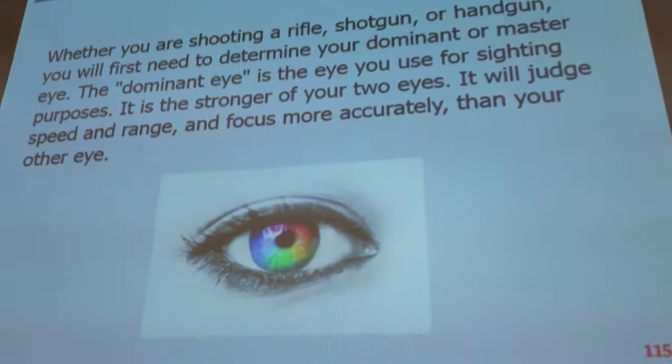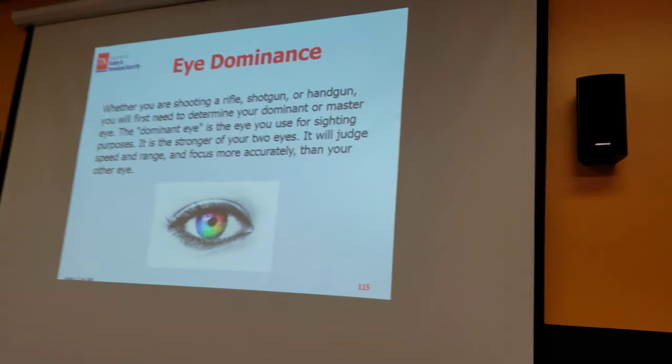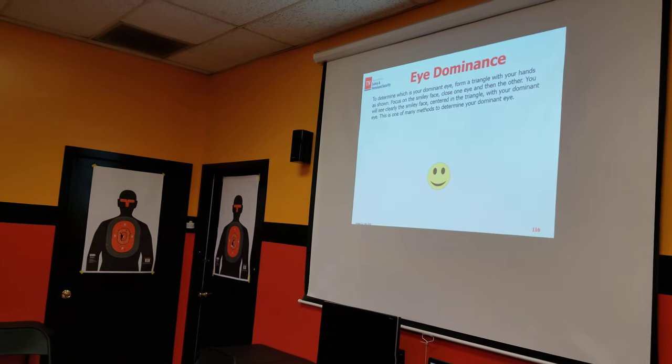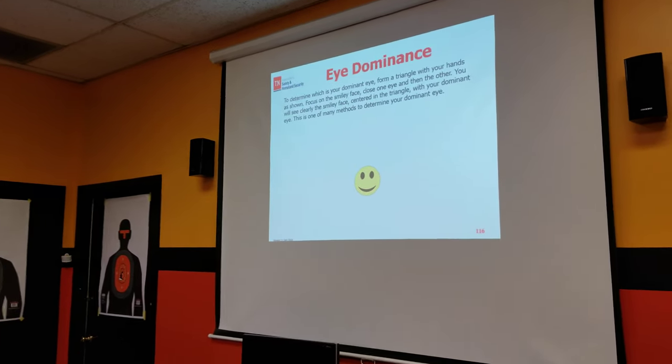So with the eye dominance test, you see that smiley face right there? What you're going to do is make a rock symbol — a Jay-Z rock. Go ahead and make that Jay-Z rock. Now what I want you to do is close that rock a little smaller. Stretch your arms all the way out.